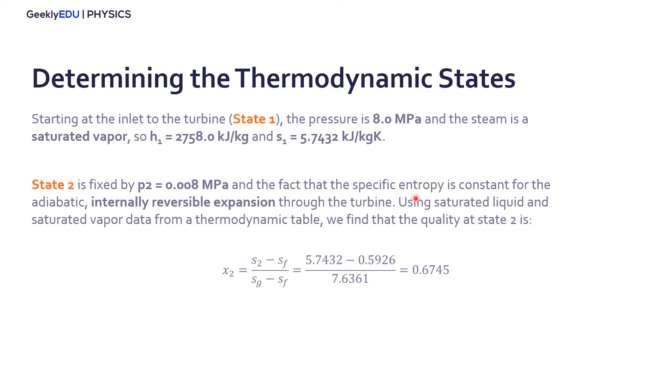So from the tables, we have S two. We have S for the fluid, we have the entropy. I'm talking S is entropy for the gas. And the entropy for the fluid here is an interpolation. So we find the quality is 0.6745. From the quality, we can use this formula here to find the enthalpy for state number two. So we have the enthalpy for the fluid plus the quality times the enthalpy for the fluid and gas.